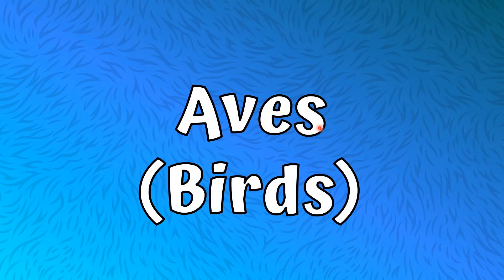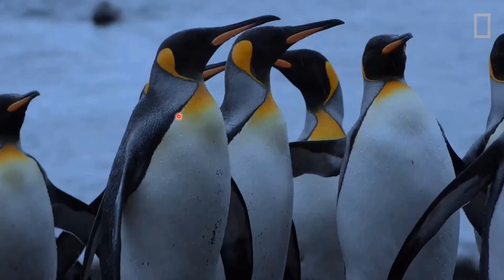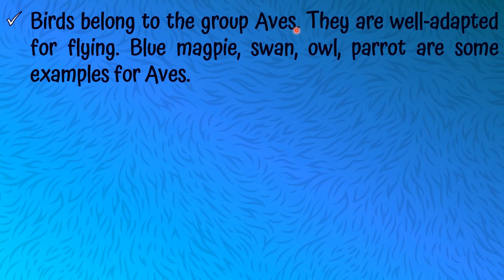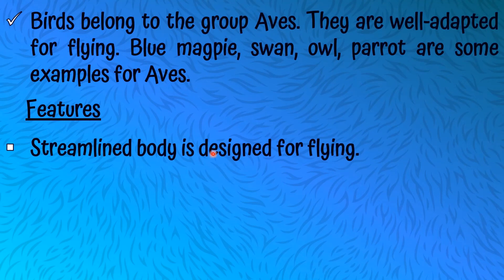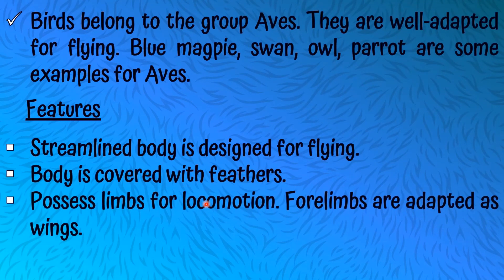Let's talk about the group Aves, or Birds. Birds are well adapted for flying. Blue magpie, swan, owl, and parrot are some examples of Aves. Features of Aves: their streamlined body is designed for flying — both fish and birds have a streamlined body shape. The body is covered with feathers. They possess limbs for locomotion, and the forelimbs are adapted as wings. They breathe using lungs.